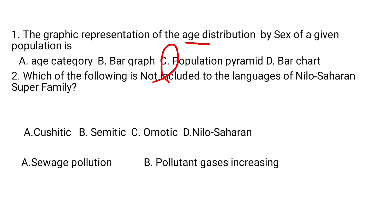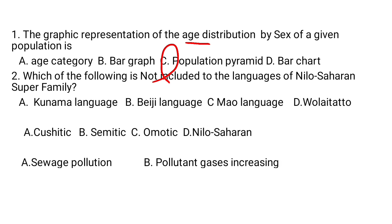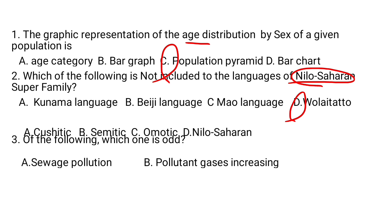Question number 2. Which of the following is not included in the language of the Nilo-Saharan superfamily? A. Kunama, B. Bej, C. Mao, D. Wunaita. Kunama, Bej, and Mao are categorized under the Nilo-Saharan superfamily language, but Wunaita is Omotic. So the answer is D.